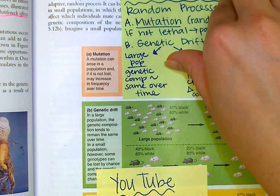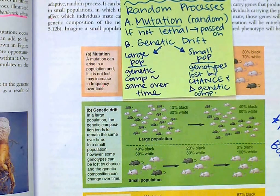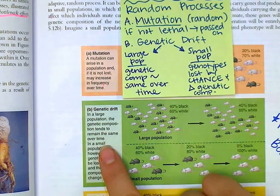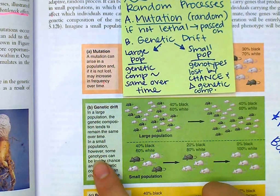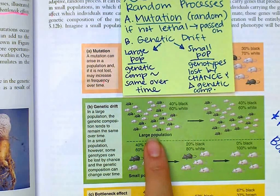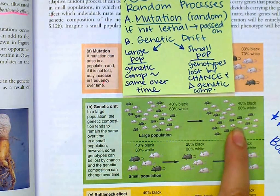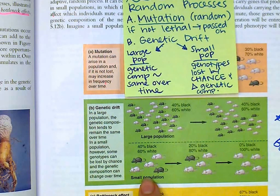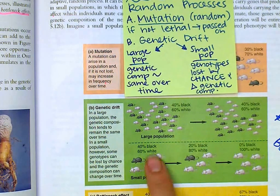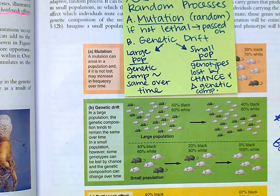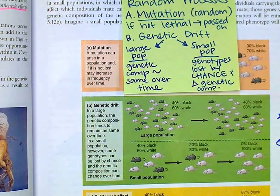Next is genetic drift, which can work in two different ways. In a large population, the genetic composition tends to remain the same over time. In a small population, however, some genotypes can be lost by chance and the genetic composition can change over time. If you have a huge population of black and white mice, chances are that ratio isn't really going to change unless there's a giant disturbance like a disease. However, if you have a tiny population of mice, eventually by chance or by preferences of the mice, the genetic composition can drift and one type can be wiped out. Genetic drift is all about chance.